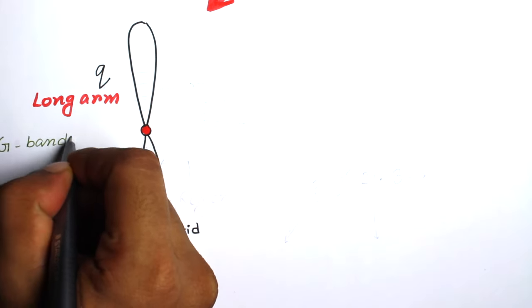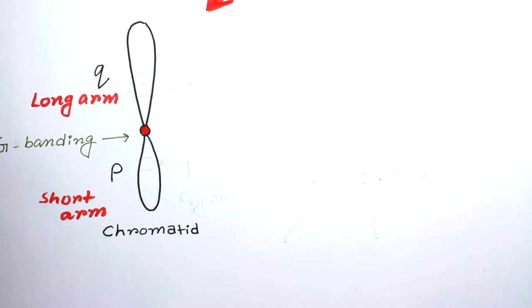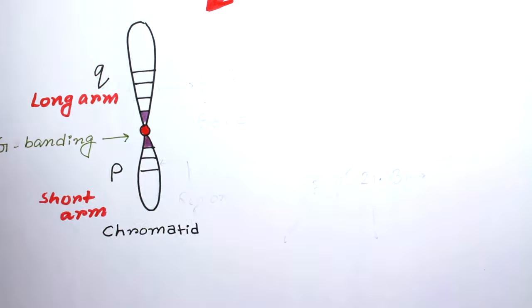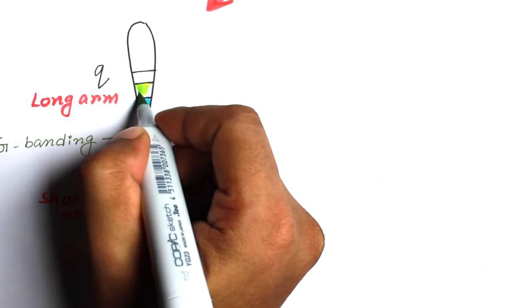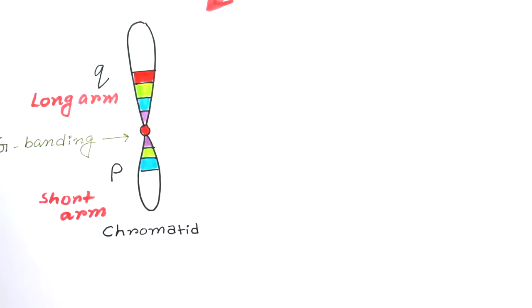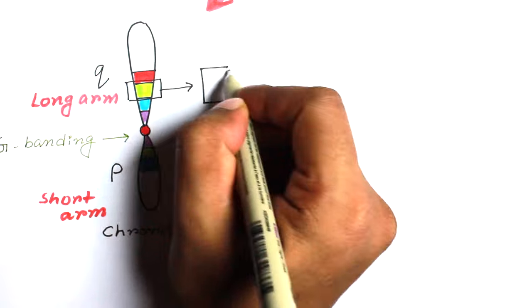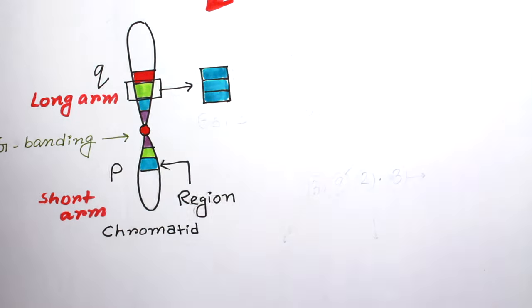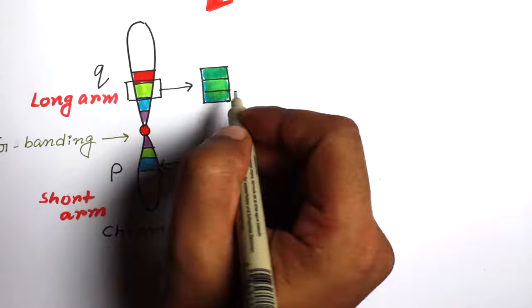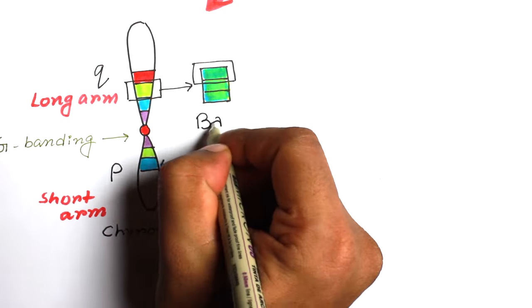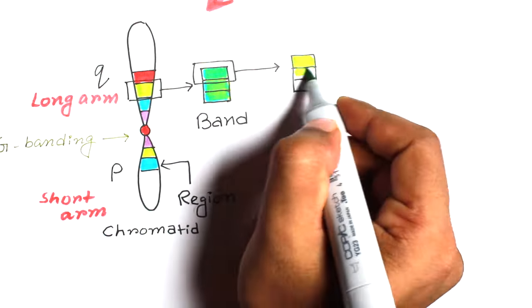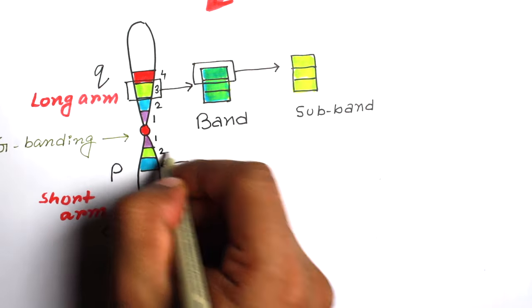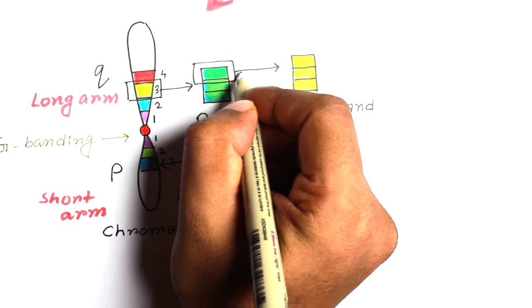After staining, some separate areas are visible under the microscope. Let's take one such area out of the chromatid. These areas are called regions. Now, region can be divided into more parts; they are called bands. And one single band can be divided into small parts; they are called sub-bands. Numbering starts from the centromere like 1, 2, 3 towards the telomere.